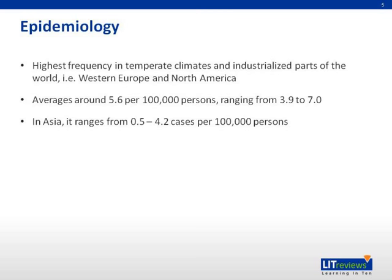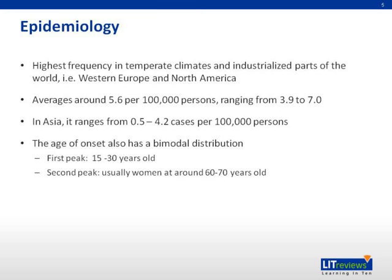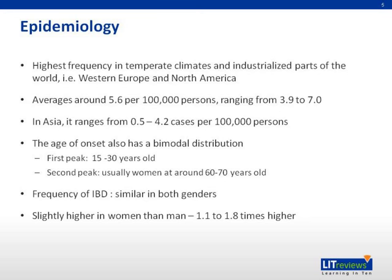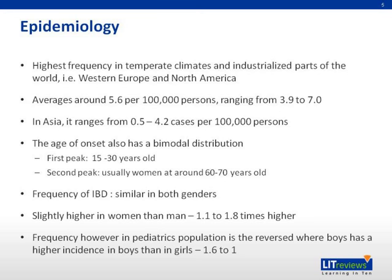The age of onset is bimodally distributed, with the first peak at 15 to 30 years old, while the second peak is usually women at around 60 to 70 years old. The frequency of IBD is similar in both genders. However, in a pediatric population this is reversed, where there is a higher incidence in boys.